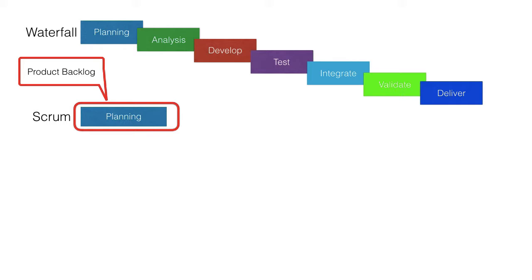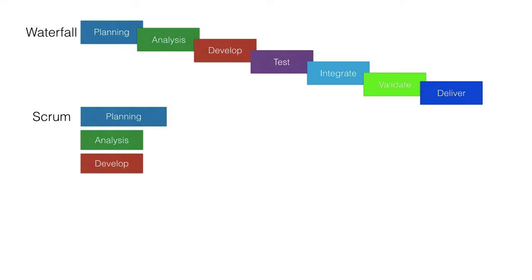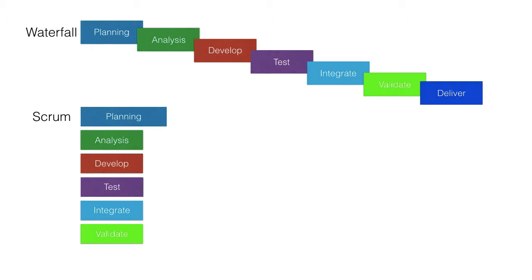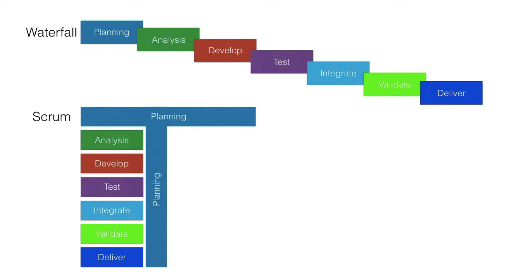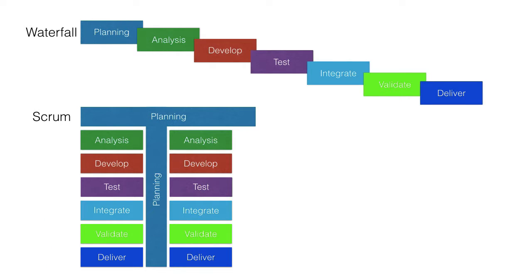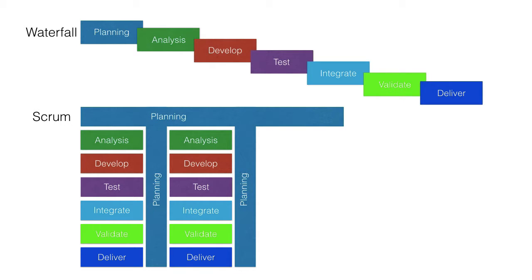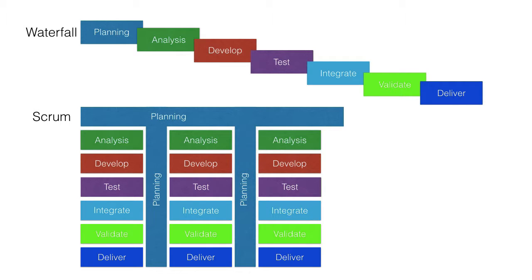The development team takes the sprint backlog—they analyze, they develop, they test, they integrate, and they validate and deliver that work in the sprint review. More planning at the product level is done; this is the product backlog grooming sessions. More planning at the sprint or iteration level is done; this is the sprint planning meeting. The work in the next sprint is done and delivered. The sprint includes a little product backlog grooming, a lot of sprint planning, and then the work of the sprint.